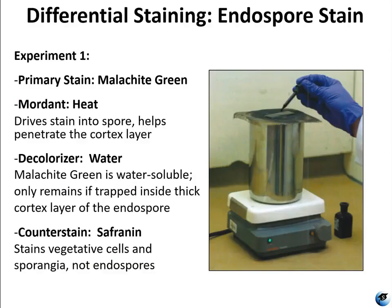For experiment one, we're doing the Schaefer-Fulton method. This is the most commonly used endospore staining technique. It uses heat to push the primary stain, the malachite green, into the endospore, helping it penetrate that thick cortex layer. The mordant for this stain is heat, and the decolorizer is water. Washing with water decolorizes the cell because malachite green is water-soluble, and it will only remain if trapped inside the thick cortex layer of the endospore.